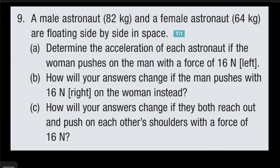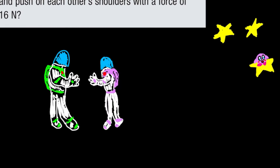Let's get started with the first part. They're asking us to consider a male astronaut and a female astronaut floating side by side in space. It's really convenient that the background is already black so you can imagine they're in outer space, and to further help you out we have some stars, with Kirby riding on a star.